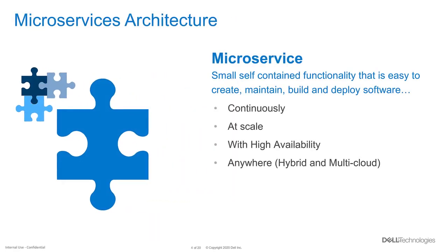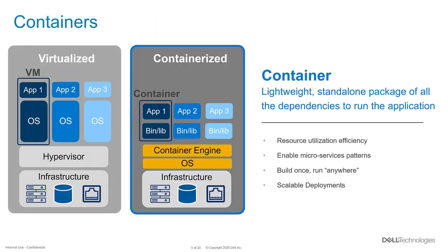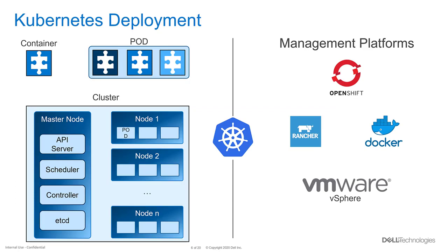This is what microservices-based architecture is all about. It enables much faster software development — you can rapidly bring new services to production, and these services can be independently scaled. Microservices are deployed using containers and managed by a robust container orchestration platform like Kubernetes. In contrast to virtual machines, containers don't carry a bulky operating system with every instance; they only package the required dependencies of the application.